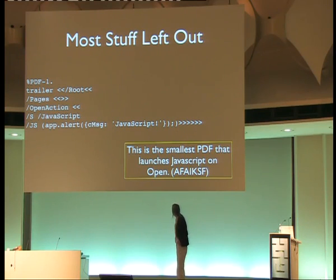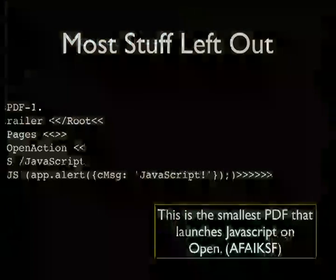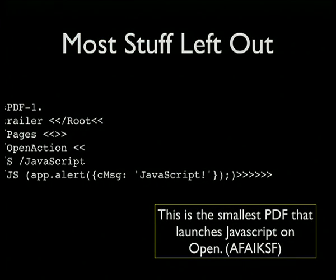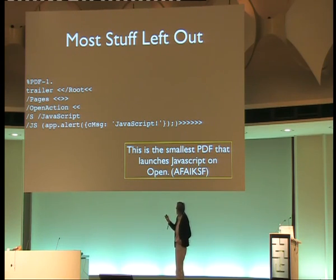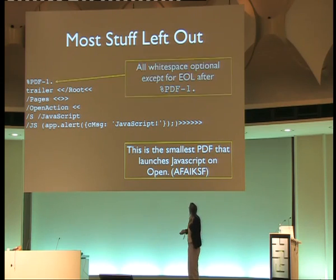If you take all the stuff you don't need out of a PDF, this is all you actually need to run JavaScript. Basically, there's the beginning of the file, there's the end of the file, and it says there's a root object with pages — no pages, rather. You have to have the pages object, but you can have zero pages. Then you just have an open action that runs the JavaScript, and that's about 75 bytes or something.